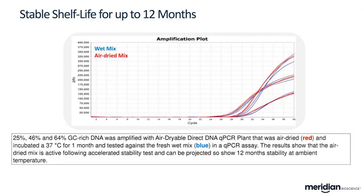We've also tested shelf life. When you dry it down, you want to store the material. After air drying the samples, you seal the plates, put in silica gel, dry and vacuum it, and put it on the shelf or ship it to where it's needed. Currently we have stability for up to 12 months. This is a new product — we'll continue stability testing and are confident we'll be able to reach at least 24 months. The assay can sit at ambient room temperature for long periods and you won't get any difference from the original wet solutions.